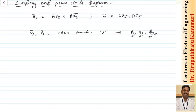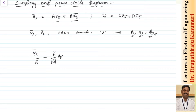From the equation Vs = A·Vr + B·Ir, dividing both sides by B gives Vs/B − (A/B)·Vr. So the receiving end current Ir can be written as Vs/B − (A/B)·Vr, expressed in terms of Vs and Vr. This is equation number 1.